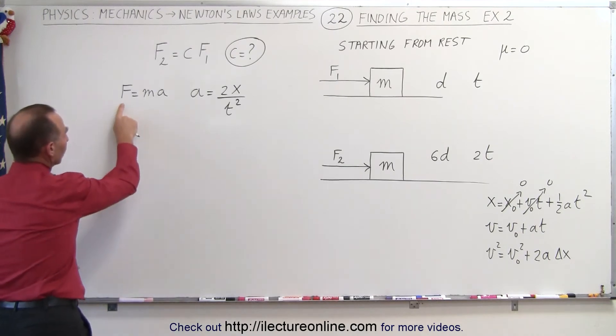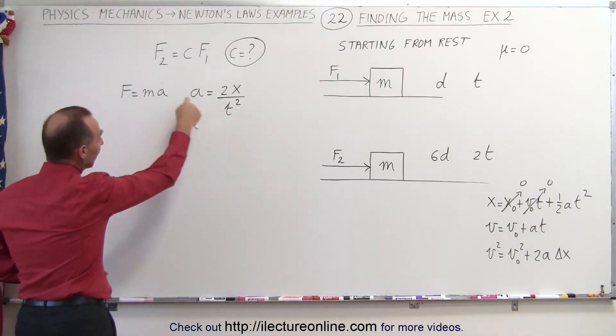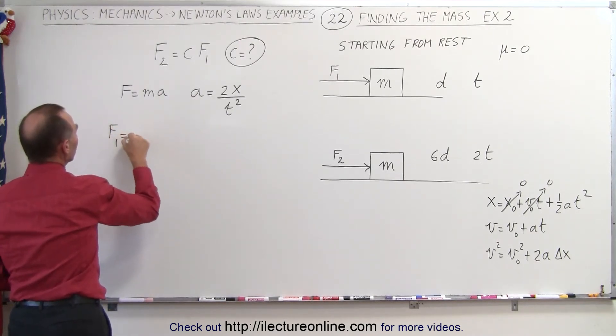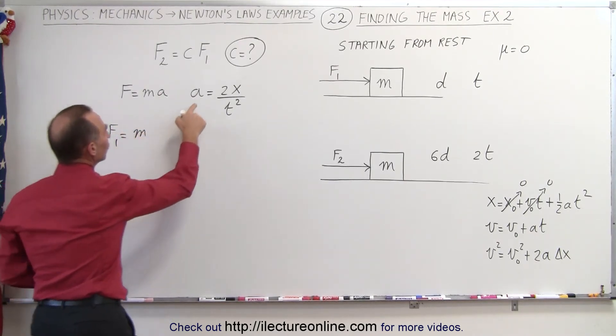So notice now we can write the force in terms of the mass, which is m, times acceleration, which can be written like this. So for f1 that's going to be equal to m times the acceleration.